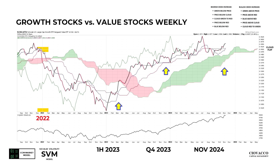This really doesn't look anything like early 2022 — because during the 2022 bear market, value stocks significantly outperformed growth stocks. Under that scenario: green was below price, price was below the cloud, the ratio was below the cloud, and the cloud flipped from green to red. Moral of the story: comparing mid-November to the bearish flip in 2022, the present day really doesn't look anything like February and March of 2022.